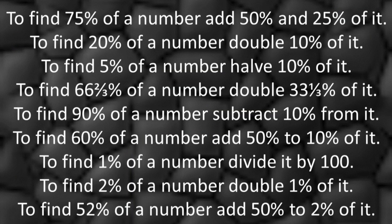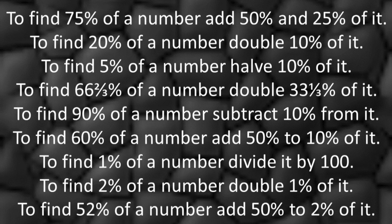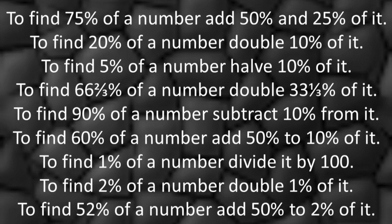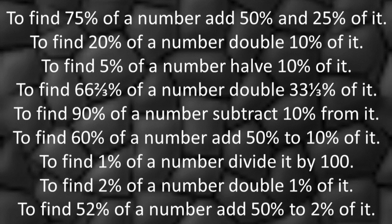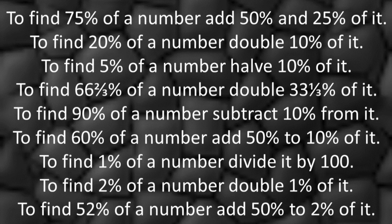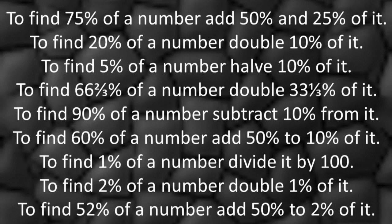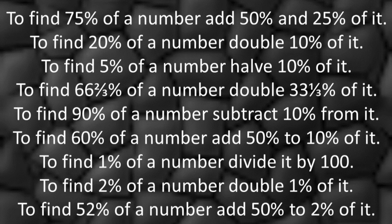So once you have those basics mastered, then there's lots of other little tricks you can make up for yourself for working out other percentages. So for example if you wanted to find 75% of a number, find 50% of it first then find 25% of it and then add those two answers together. If you want to find 20% of a number you find 10% first, that's very easy dividing by 10, and then you double it. If you want to find 5% of a number you just halve 10%. And if you want to find 66 and two-thirds percent of a number you double the 33 and a third percent fraction of it.